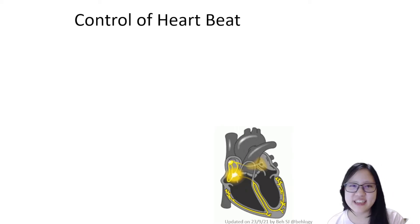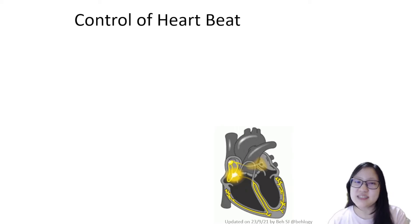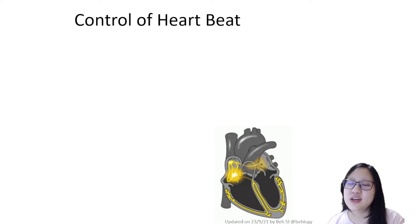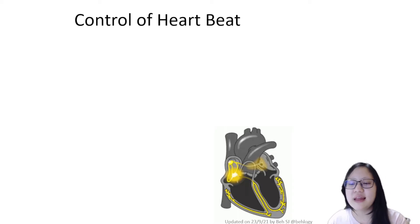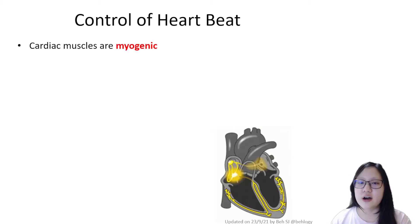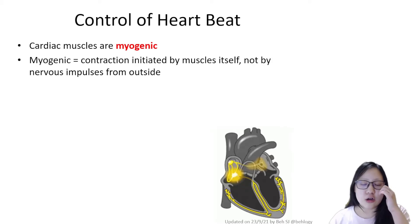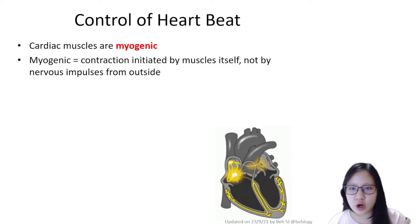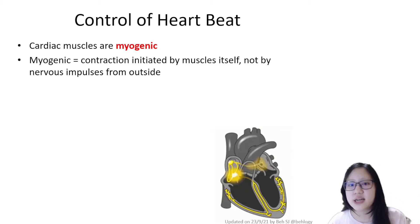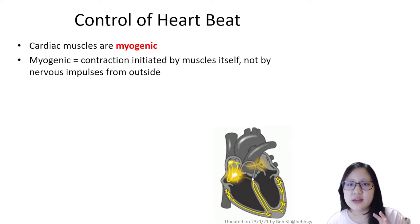Hello everyone and welcome to Chapter 823C, which is the last part of Chapter 8. This video is about the control of the heartbeat, mainly the nervous pathways that go through the heart. It's important to know that the cardiac muscles are myogenic — the contractions are not initiated by nervous impulses from the brain or the outside. The contraction is initiated by the muscles itself within the heart.